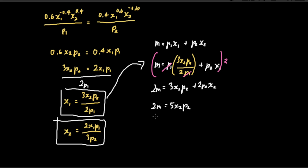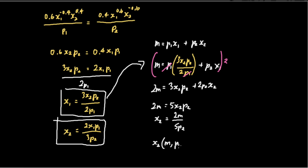Since we're looking for x sub 1 and x sub 2, we want to isolate x sub 2. So x sub 2 is now equal to 2m over 5*p2. We see that x sub 2 is actually dependent on the values of m and p2. If m increases, x sub 2 increases. If p2 increases, x sub 2 decreases. So x sub 2 is actually a function of m, p1, and p2, which is equal to 2m over 5*p2.